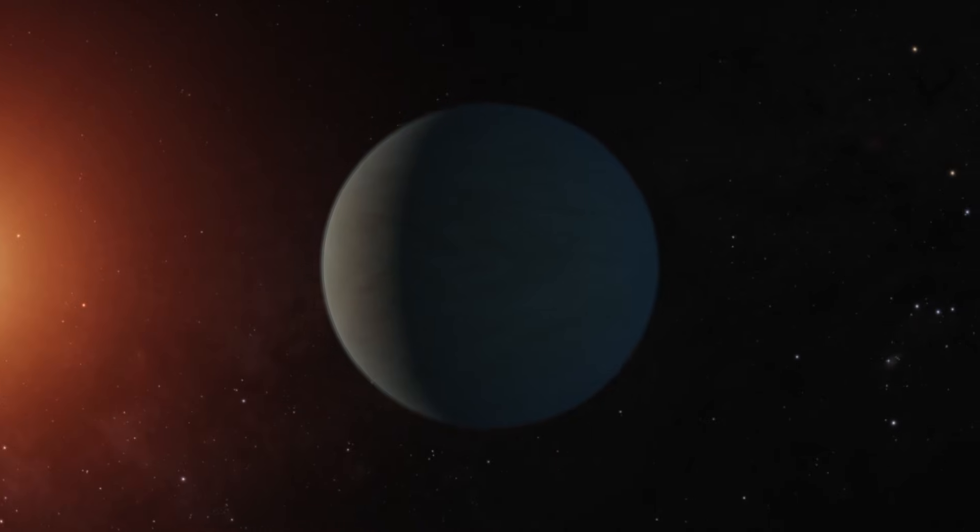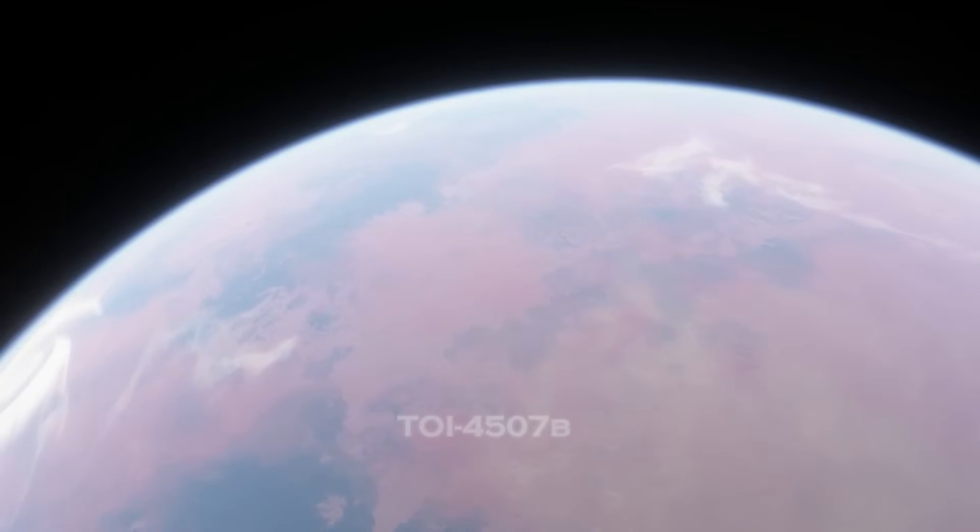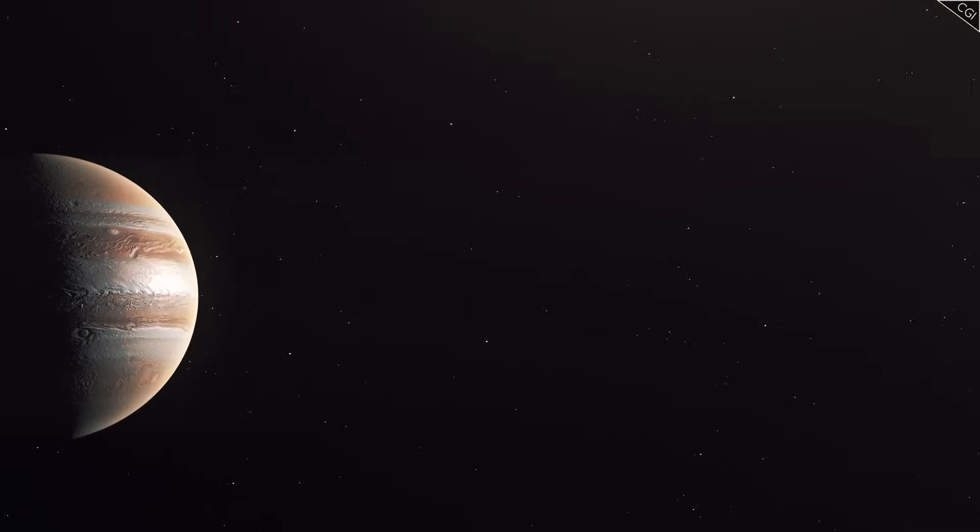One of the first cracks in our understanding comes from a planet that, on paper, makes no sense at all. TOI 4507b is a gas giant roughly the size of Jupiter, yet its density is dramatically lower than anything we expect for a planet of that scale.